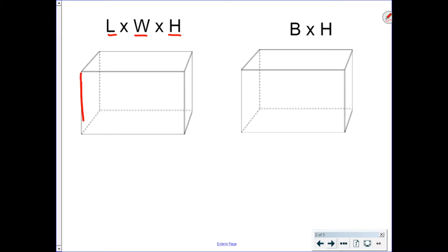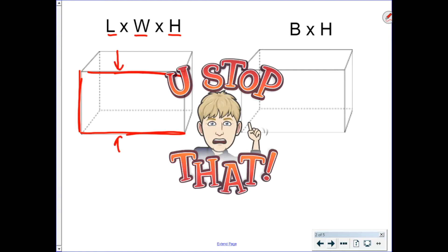You just need to have measurement one going up and down, measurement two going side to side, and measurement three kind of going diagonal. In other words, you can't use this side, this side, and this side because the top and the bottom are actually the same measurement.